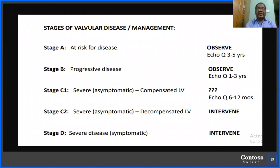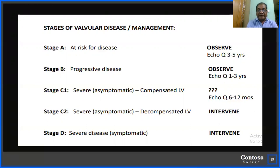Valvular management differs by stage. Stage A (at risk): observe with serial echocardiography every 3–5 years. Stage B (progressive disease): echo every 1–3 years. Stage C1 (severe asymptomatic, compensated LV): controversial — either follow-up echo every 6–12 months or intervene. Stage C2 (severe asymptomatic, decompensated LV): intervention is clearly indicated. Stage D (severe symptomatic): intervention is mandatory.